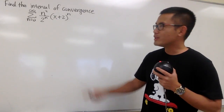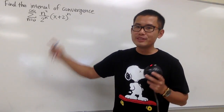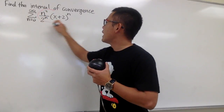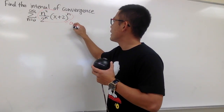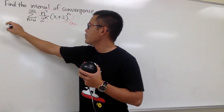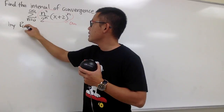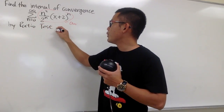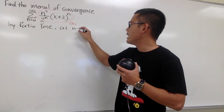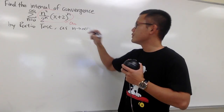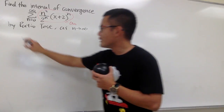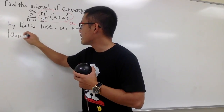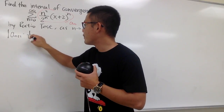We're going to find the interval of convergence of this power series by using the ratio test. Here is our a_n. We will be using the ratio test, and by the ratio test, we will have to first take the limit as n goes to infinity of the absolute value of a_{n+1} times 1 over a_n.